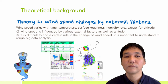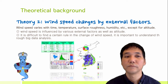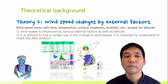Theory 2: Wind speed changes due to external factors. Wind speed is influenced by various external factors as well as altitude. It is difficult to find a certain rule in the change of wind speed, so it is important to understand it through big data analysis.